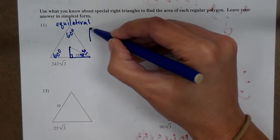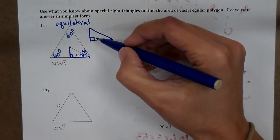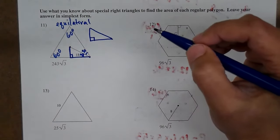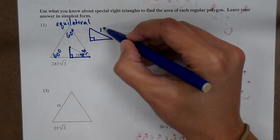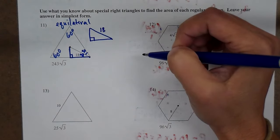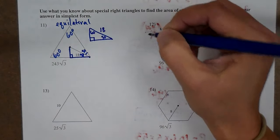I'm going to pull that little bitty triangle out so you can see it. In this triangle here, I know that the radius, which is the hypotenuse of my triangle, is 18. I know this is 30, which means that's 60.